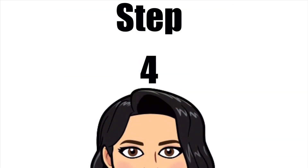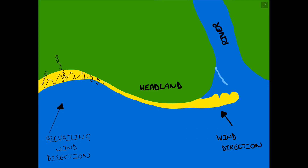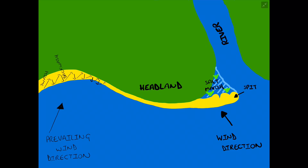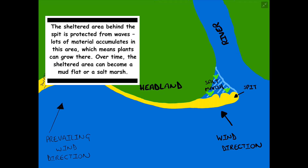Step four is when a sheltered area forms behind the SPIT. That stretch of coastline, protected from the waves by the SPIT, allows material to accumulate, enabling plants to grow. Over time, the sheltered area can become a mud flat or a salt marsh. Importantly, a SPIT never attaches to the opposite side of the river or headland — it is only ever connected by the one headland it first travels around.